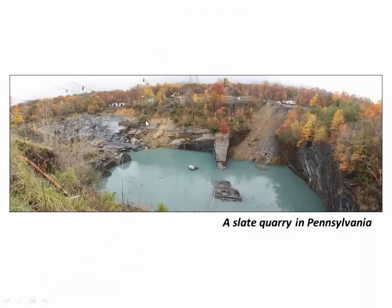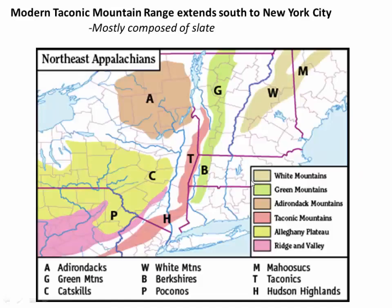That's called the Taconic belt or Taconic mountains. Here's an example of a slate quarry — this one's in Pennsylvania but it's very similar to the many slate quarries in the southern Champlain Valley of Vermont and New York. These Taconic slates comprise a whole mountain belt called the Taconic range, which extends from just south of us here in the Champlain Valley all the way down to New York City. This entire Taconic belt represents those deeper-water shales thrust westward during the Taconic Orogeny beginning around 460 million years ago.